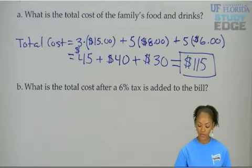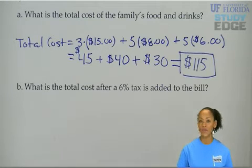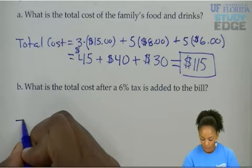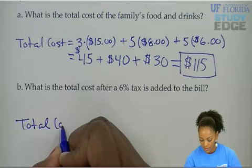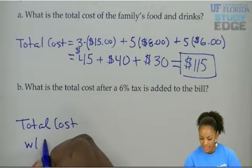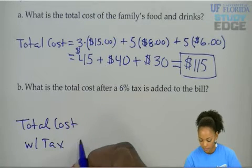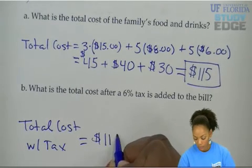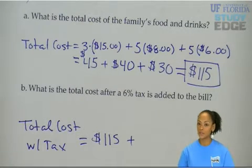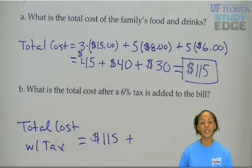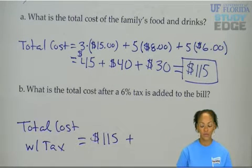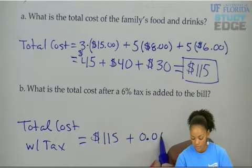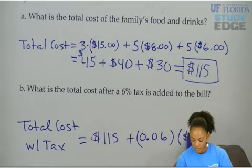Now, that was the total cost. But what is the total cost after we include tax? We all know tax. When we go to buy stuff in Florida, we pay 6% tax. So I'm going to call it total cost with tax. You can add the total cost plus the tax, which is 6% of $115. Remember, 6% as a decimal is divided by 100. So 6% divided by 100 is 0.06, and you multiply that times $115.